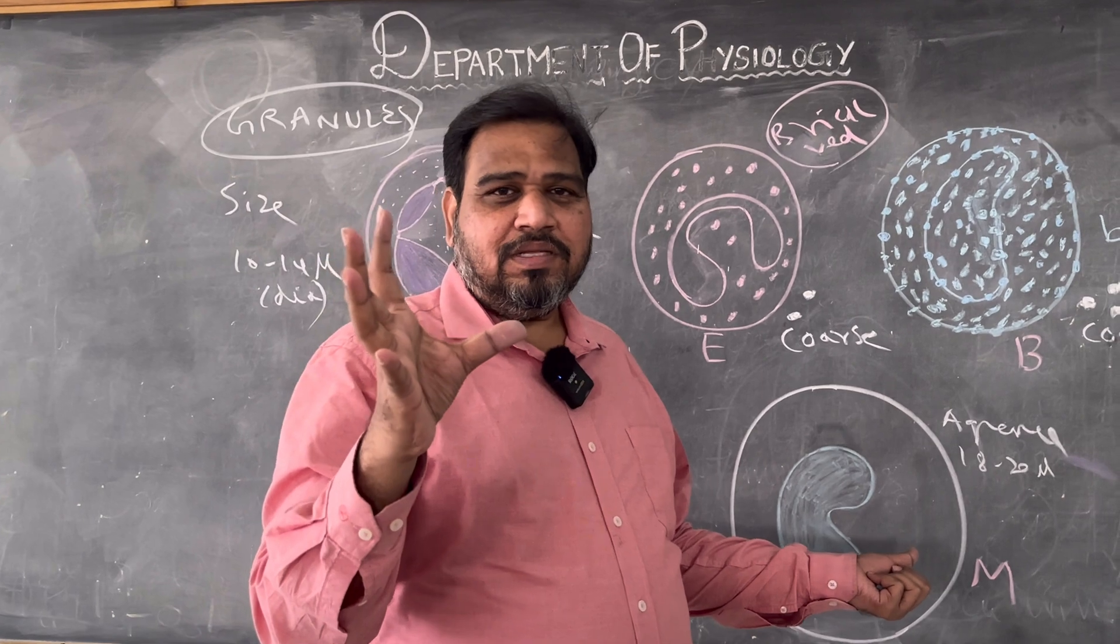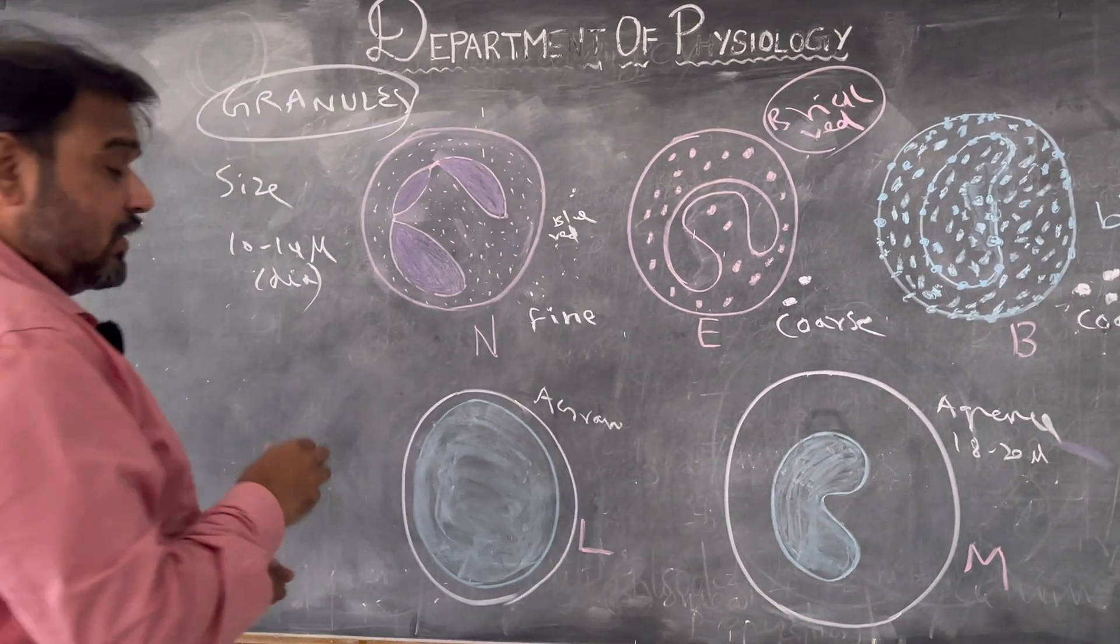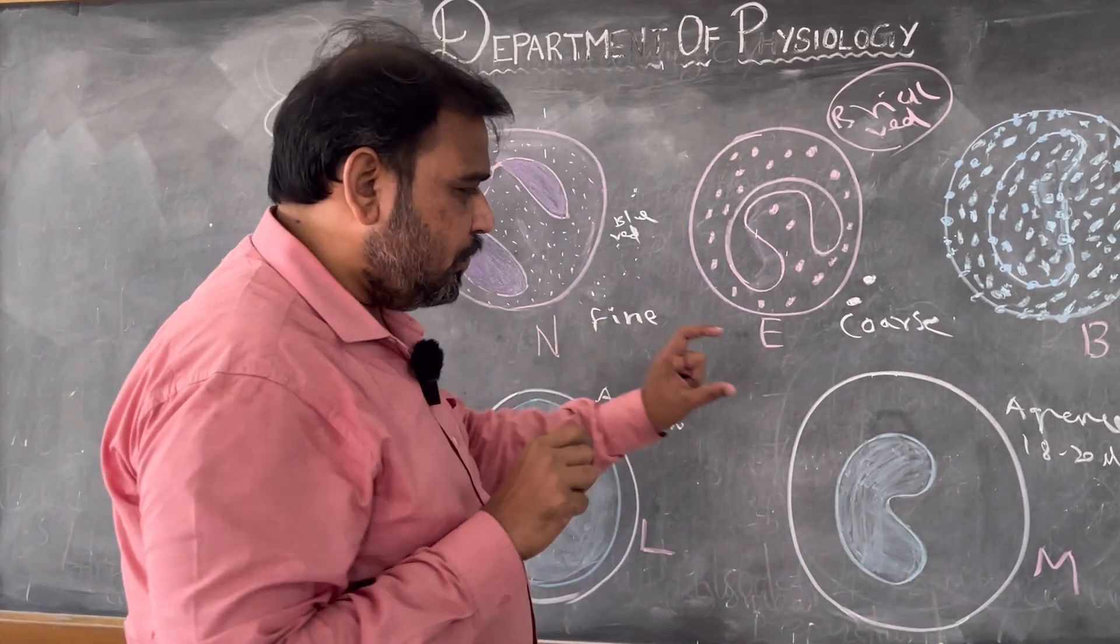I will not accept if you tell, sir largest WBC is monocyte, so if I see a larger WBC in the microscope that is monocyte. No, not accepted because it is very difficult. We cannot measure the size, so it is very difficult to just tell about the size alone.